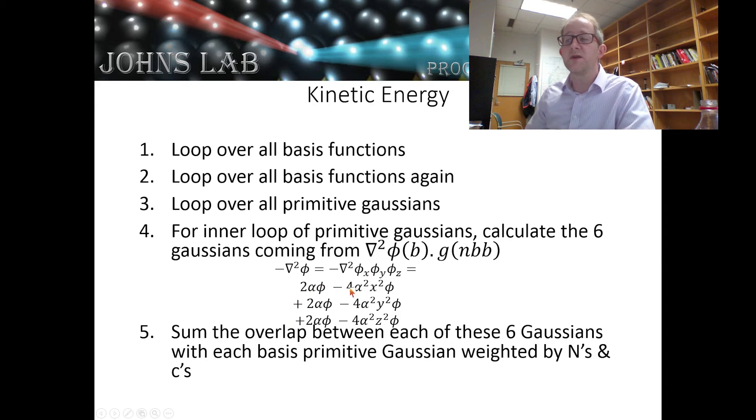Or six new Gaussian functions. Three of them are the same, and three of them are Gaussian functions multiplied by polynomials. We'll deal with these polynomials individually. Once we have angular momentum, once we've written the code to deal with angular momentum, this will be easier.